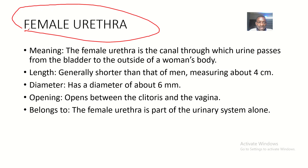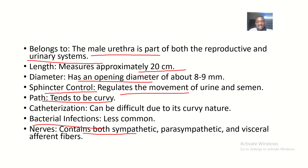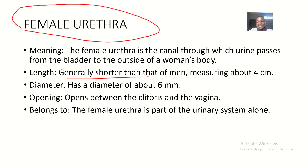Narrowing our focus to the female urethra: the female urethra is a canal through which urine passes from the bladder to the outside of a woman's body. In women, the urethra only serves the function of urinating. Its length is generally shorter than that of men — it is just four centimeters, while that of men is about 20 centimeters, making the male urethra five times as long as the female urethra.